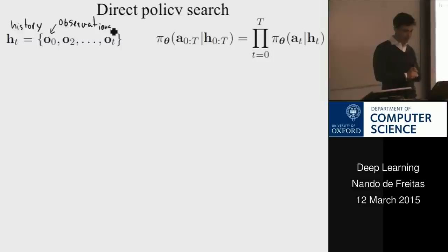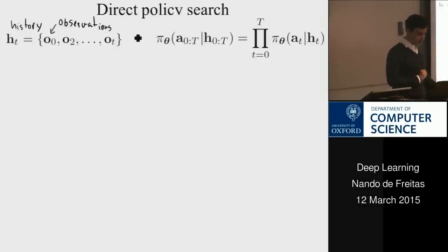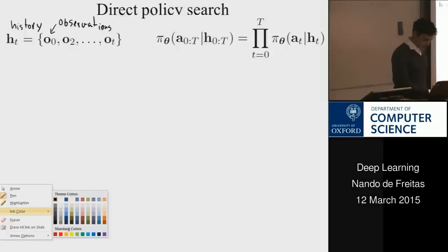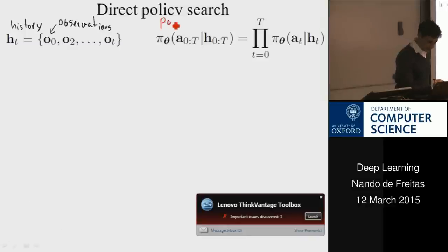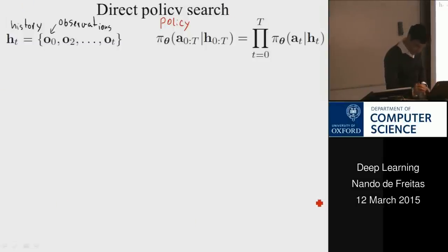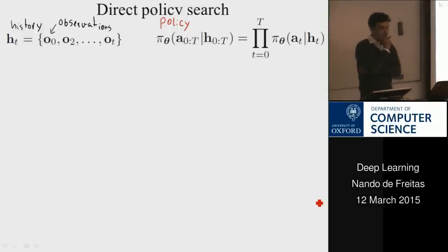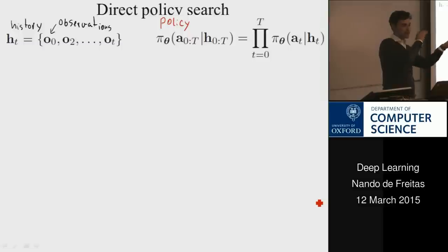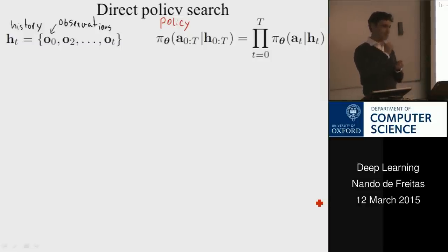Let's stay at the abstract level. You make a sequence of observations — that's the history. We introduce the policy: a strategy that maps histories to actions. Given all these observations, I choose an action. After going on a series of 'dates' and observing things, I make a decision — I've seen enough to choose.